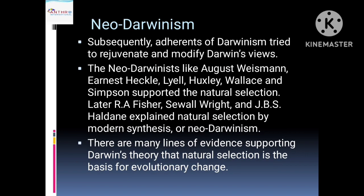What is Neo-Darwinism? Subsequently, adherents of Darwinism tried to regenerate and modify Darwin's views. These supporters of Darwinism continuously brought new experiments and new views based on five principles. These principles were modified and given a valid decision to prove that Darwin's principles are valid.